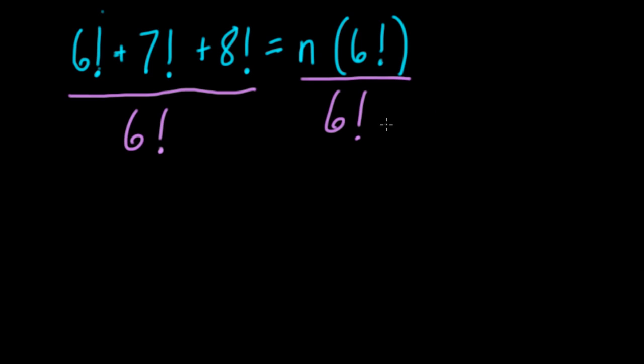So sometimes when we're solving, instead of evaluating 6 factorial, we can use it in a calculation to reduce what it really is. Because remember, 6 factorial means take 6 and multiply it by 5 times 4 times 3 times 2 times 1, which is not a number I feel like working with.